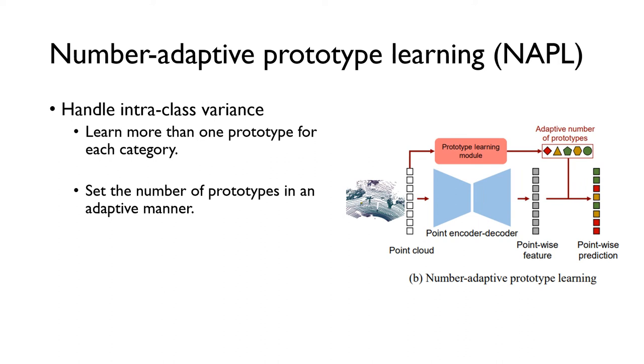To better handle the data variance, we can use more than one prototype for each class, so that points of the same class can be assigned to different prototypes. Because we have no prior knowledge about how many prototypes each class needs, in this work we propose to use an adaptive way to set the number of prototypes. We call this paradigm Number Adaptive Prototype Learning.